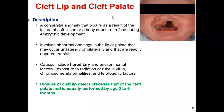Cleft lips and cleft palate are conditions present at birth involving an opening or split in the upper lip, roof of the mouth, or both. This occurs when facial features do not fully develop during pregnancy — a congenital anomaly resulting from failure of soft tissue or bony structure to fuse during embryonic development, involving an abnormal opening in the lip or palate that may occur unilaterally or bilaterally and is readily apparent at birth.